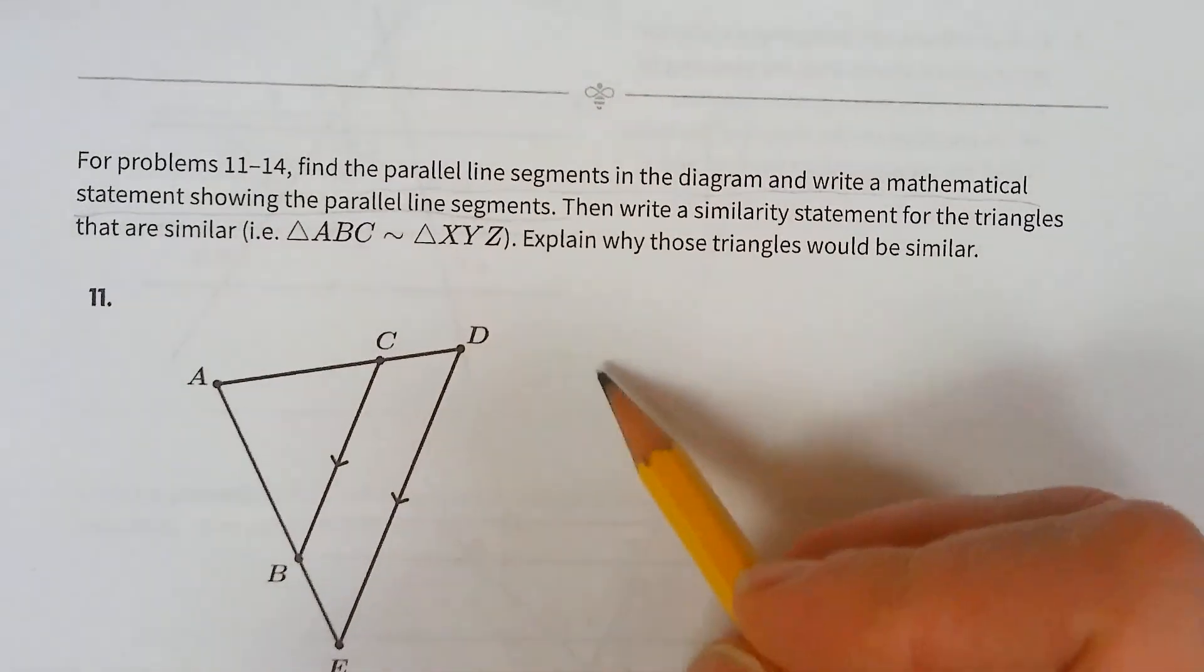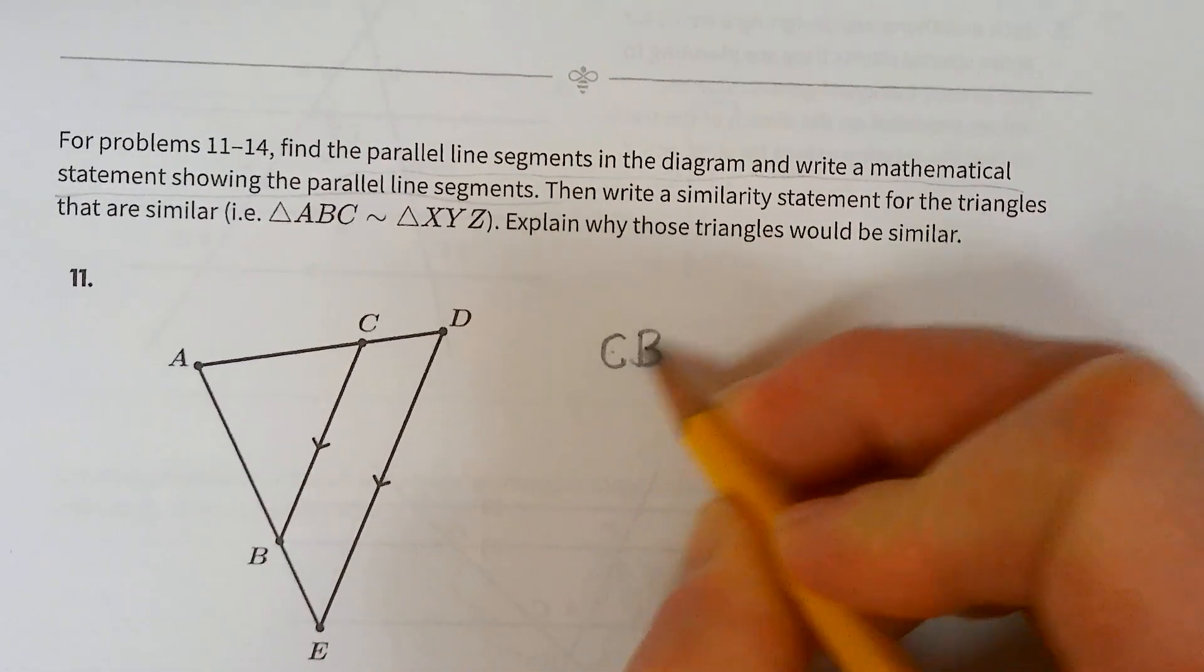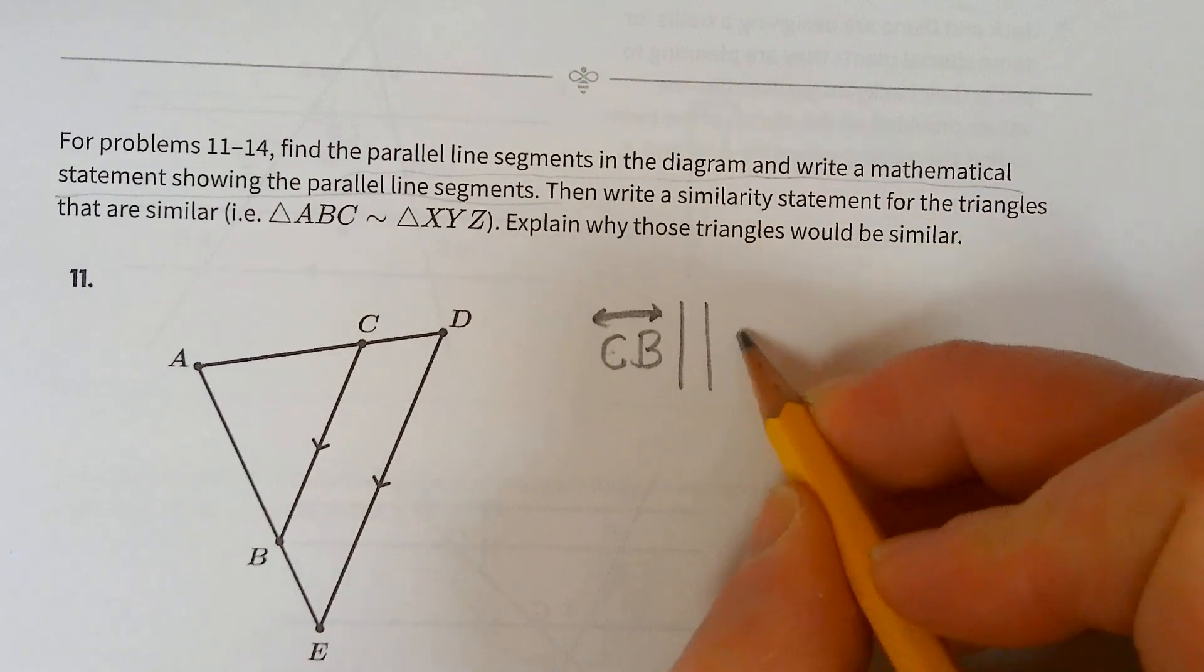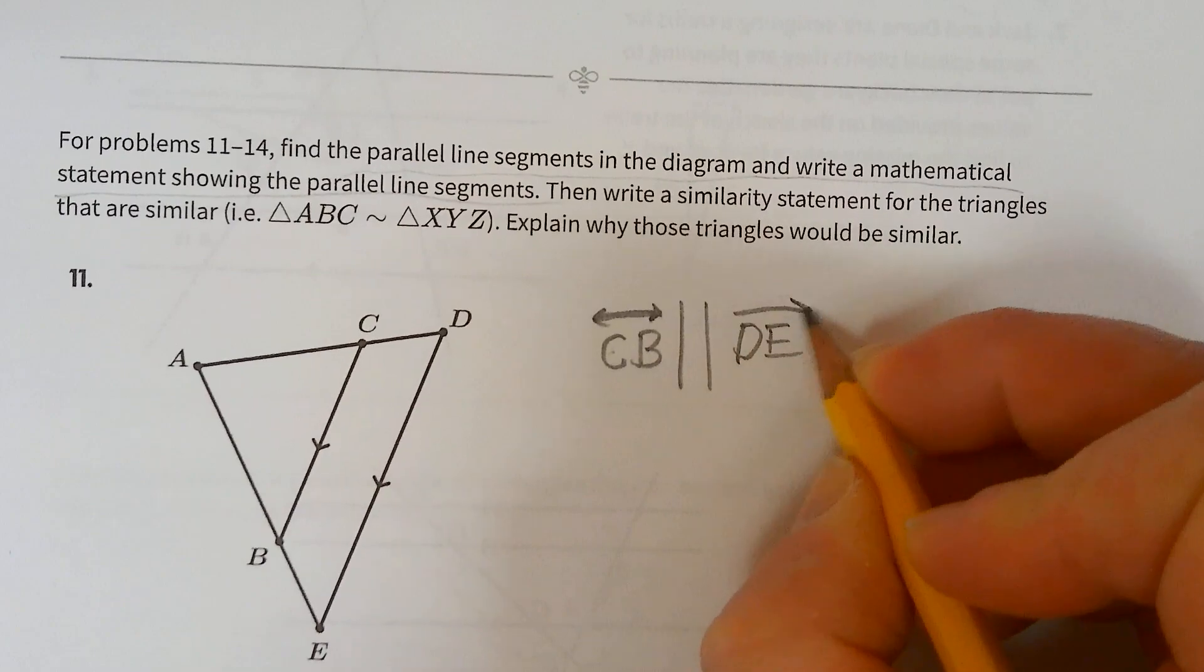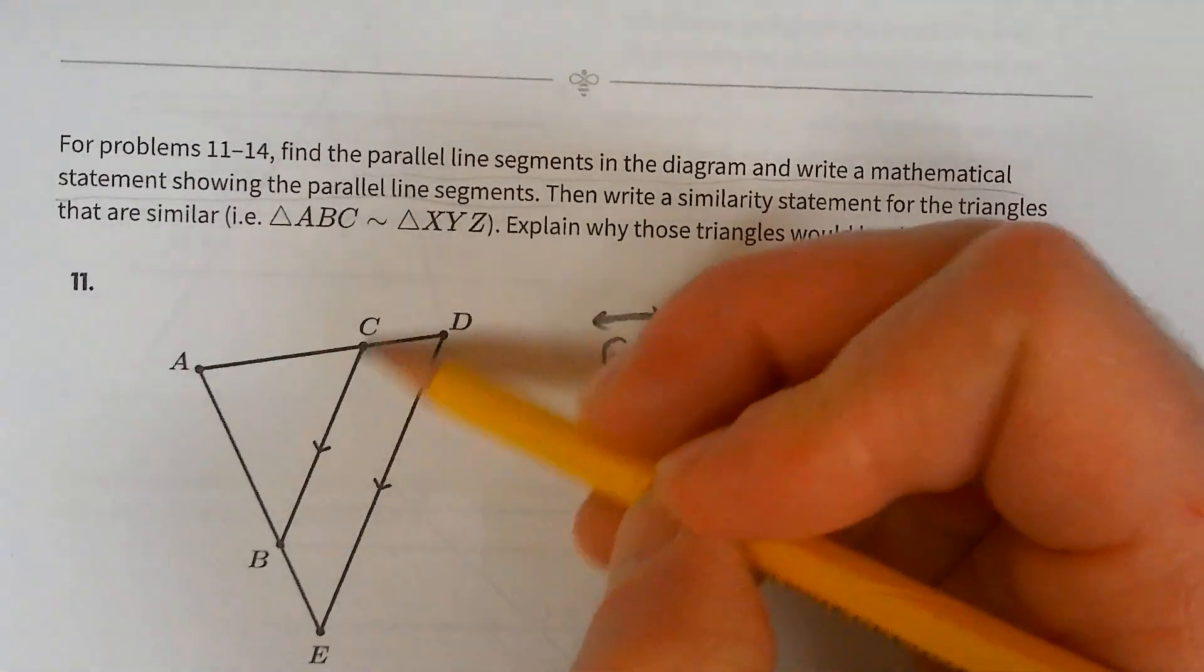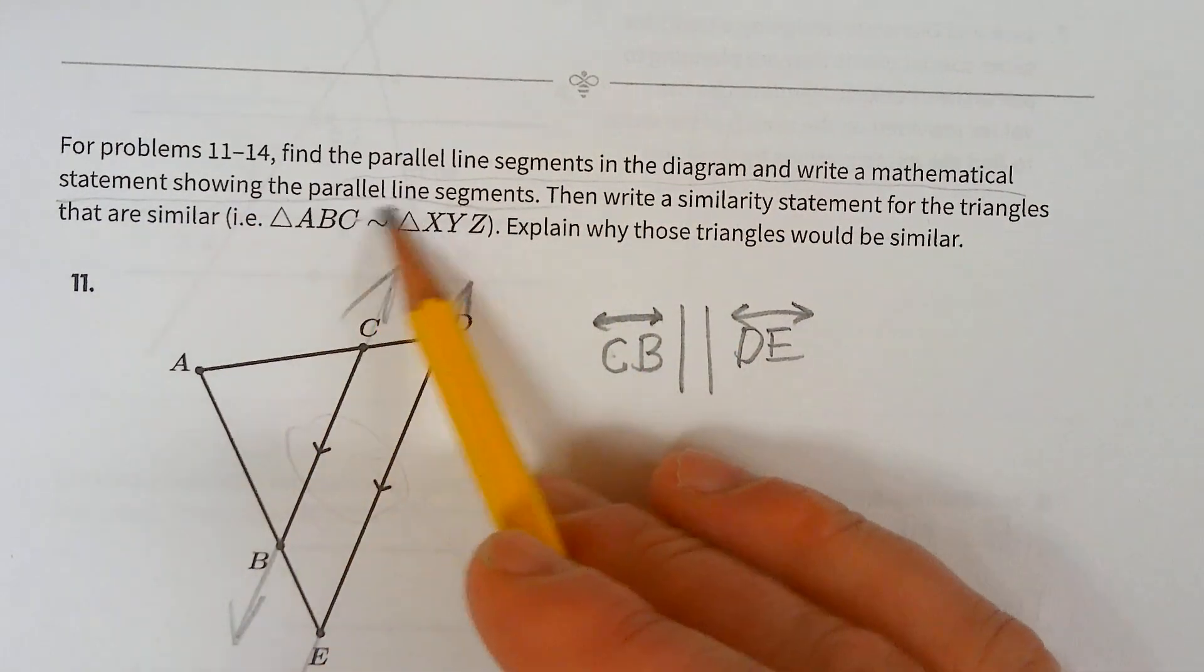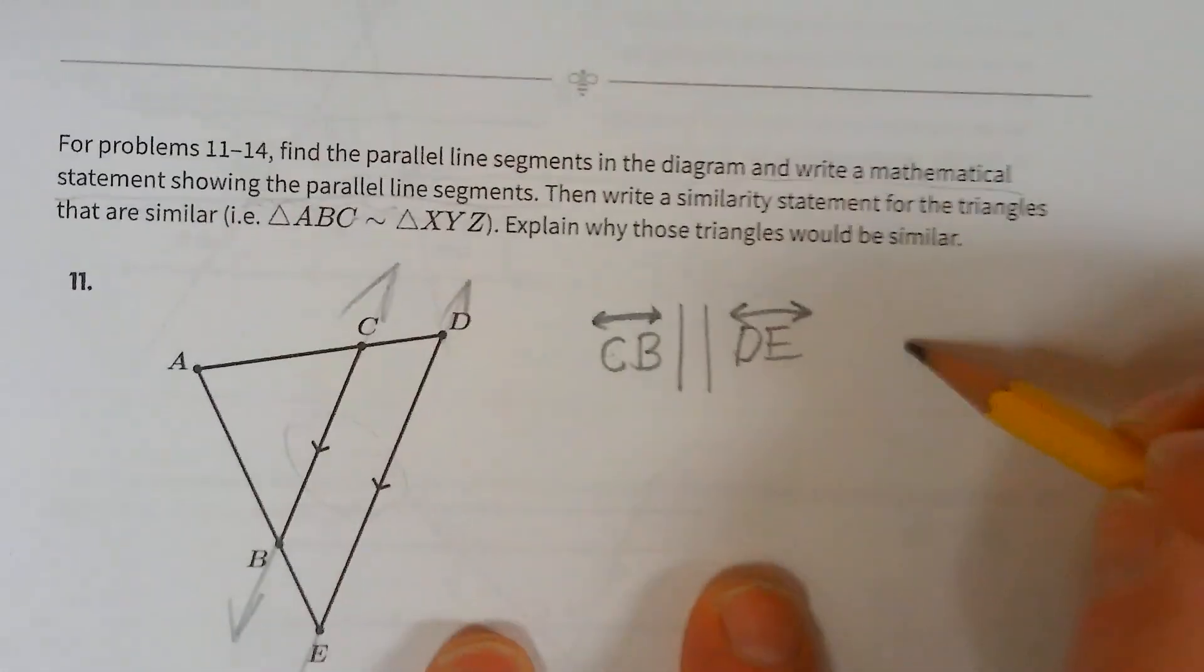Find the parallel line segments in the diagram. You're going to write a mathematical statement showing the parallel line segments. Okay, we haven't done this for a while. I disagree that it should be segments. People differ in their opinion. I believe this mathematical statement should include the whole lines that go on forever, because the lines that go on forever are parallel because of these marks. I think that shows that the segments must be parallel, so I like that better.